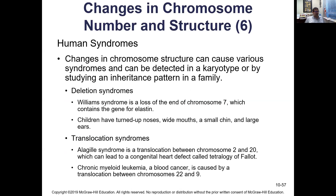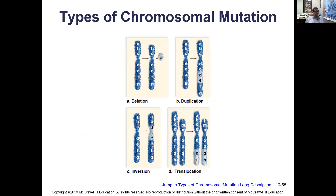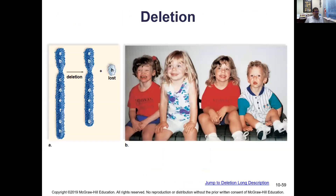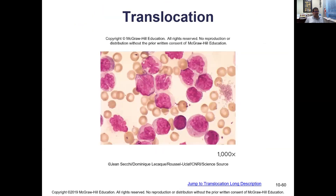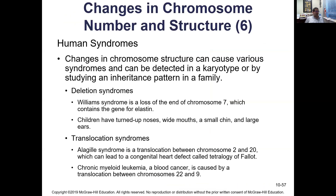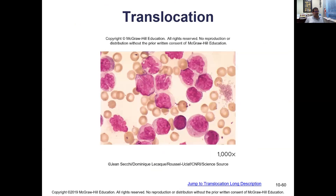Famous examples of chromosomal structural disorders: Alagille syndrome is a translocation between chromosomes 2 and 20; Williams syndrome is a chromosome 7 deletion, characterized by turned-up nose, wide mouth, small chin, and large ears; chronic myeloid leukemia (CML) is a blood cancer caused by translocation of chromosome 22 to 9. These show how deletions, duplications, translocations, and inversions — where pieces break off and reattach backwards — can cause serious disease.